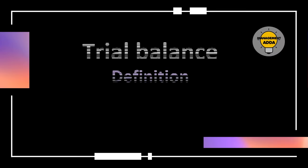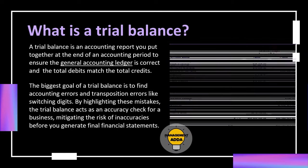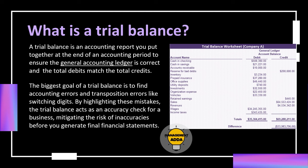A trial balance is used to ensure the debit and credit balances are equal. It is an accounting report you put together at the end of an accounting period to ensure the general accounting ledger is correct and the total debits matches with the total credits. The biggest goal of a trial balance is to find accounting errors and transposition errors, like switching digits, by highlighting these mistakes. The trial balance acts as an accuracy check for a business, mitigating the risk of inaccuracies before you generate final financial statements.